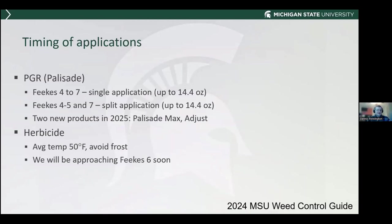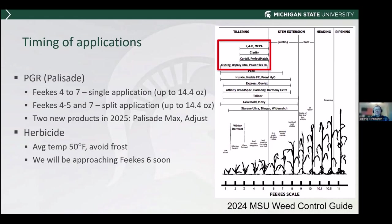For herbicide applications, aim for an average temperature of 50 degrees Fahrenheit — if it gets up to 60 during the day and down to 40 at night, that average is 50 — and avoid frost. When we warm up, we are going to rapidly get to Feekes 6. Make sure you're on top of what growth stage your wheat is at. There are some products that can only be applied up to Feekes 6, and after that you need to switch to different products.